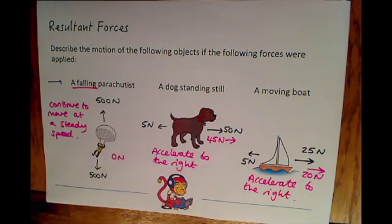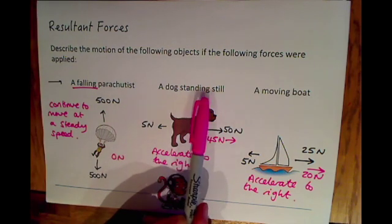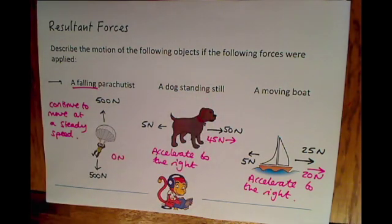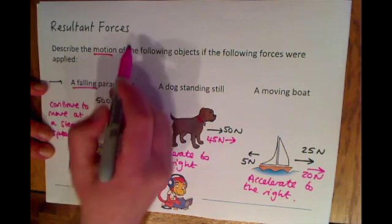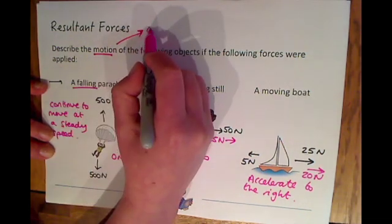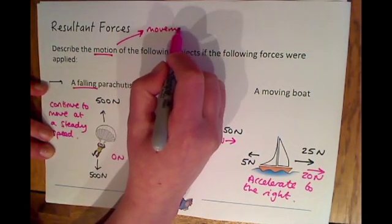With these questions, look out for what the object is doing initially. They won't necessarily say it's stationary or moving — they might say the car is parked, or describe a scenario. Work out the resultant force and then determine what's happening with the motion of the object. The word 'motion' is used a lot in exams — think of it as meaning movement. What is the object doing?